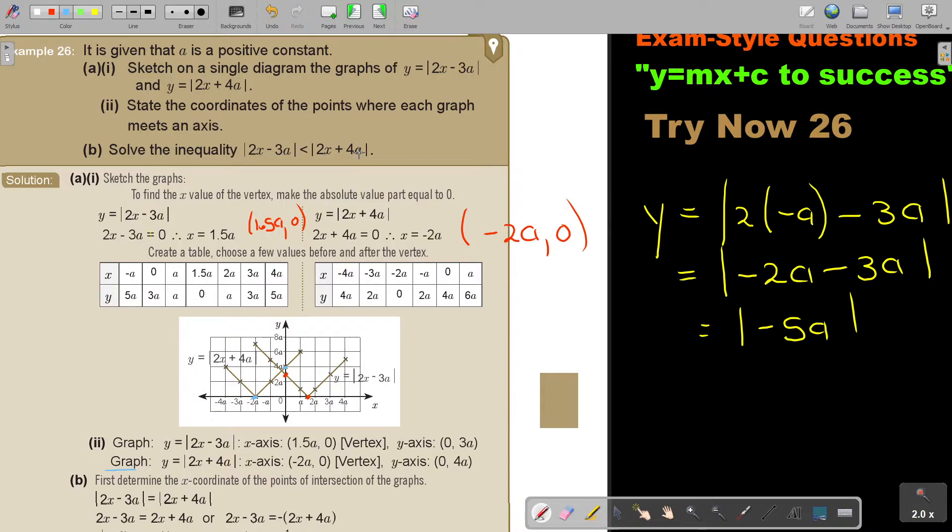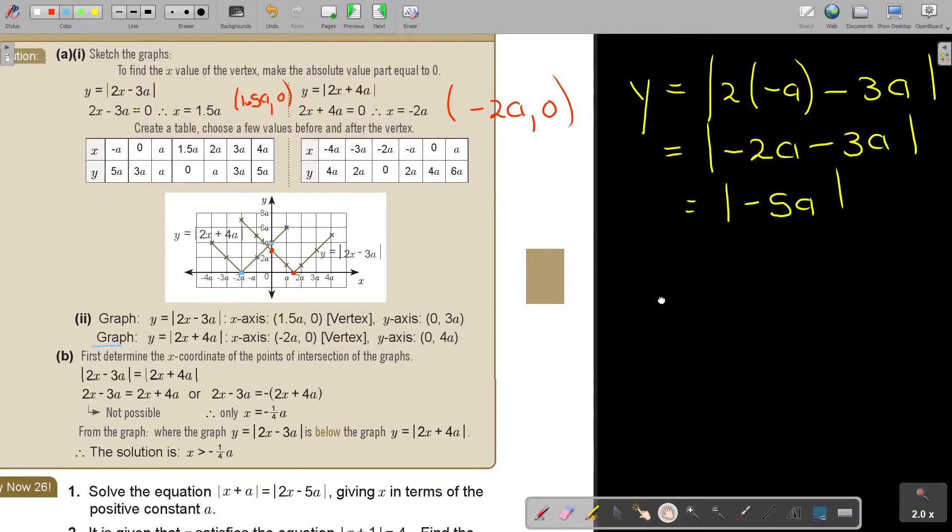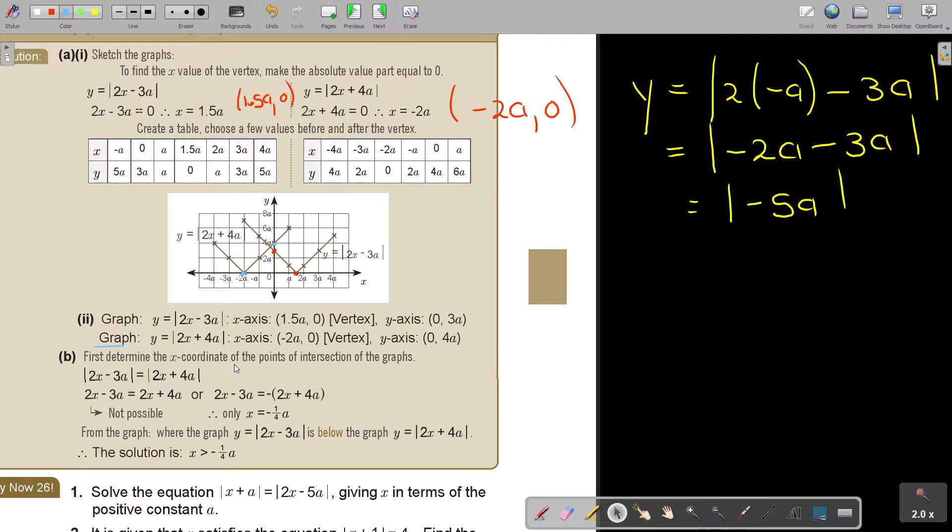Now solve the inequality. I'm solving it with this a now. So do exactly your method that you know. First determine the x-coordinate of the points of intersection of the graphs. So basically, what I'm just doing is I'm just going to solve an equation. So to get this away, I make one positive and I make one negative, or I can square, square, but I use this method. Now why do I say not possible? If you see something, just go and write it out and simplify it yourself. I want to show you now here.